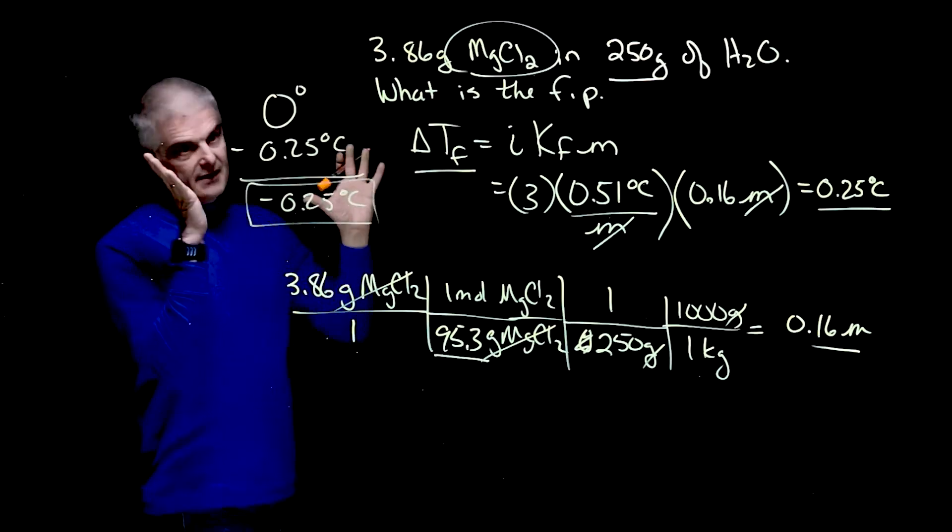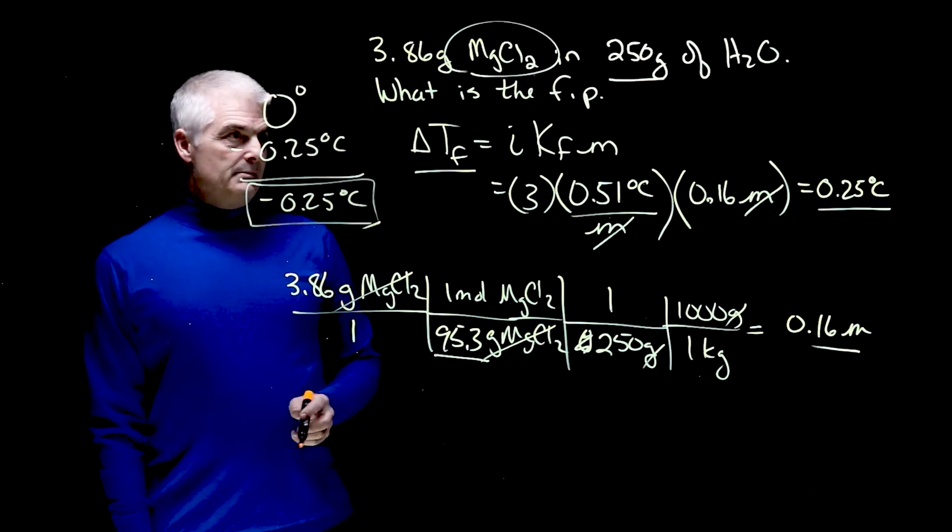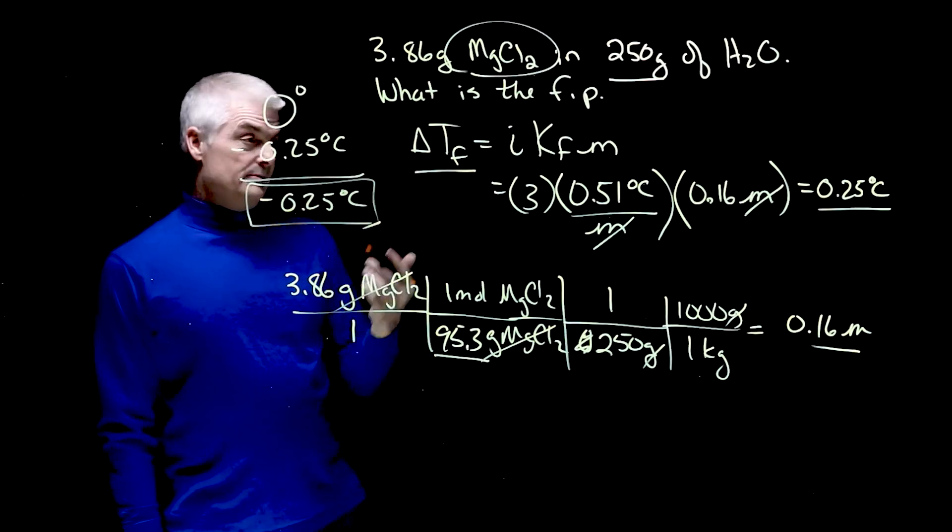Most of the time we're going to get numbers that are like 5 degrees, 10 degrees, or whatever. But this is the example that I just made up in my head. So that's how you do freezing point depression problems.